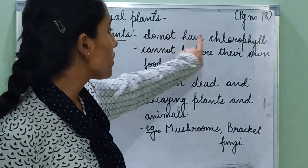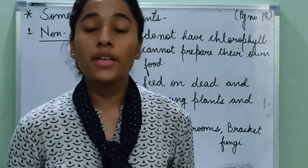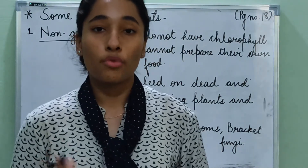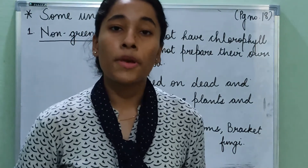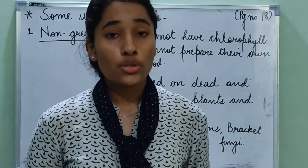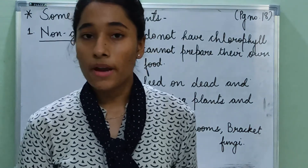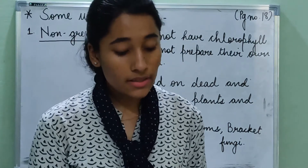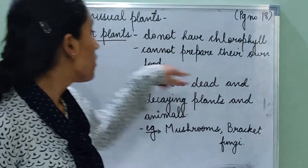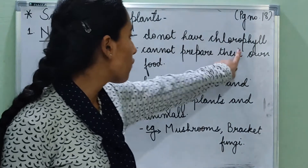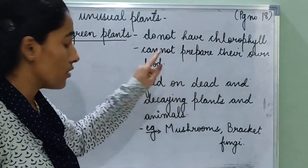They do not have chlorophyll, and we have learned that chlorophyll is very important for the process of photosynthesis for a plant to prepare its food. So if they do not have chlorophyll, they cannot prepare their own food.